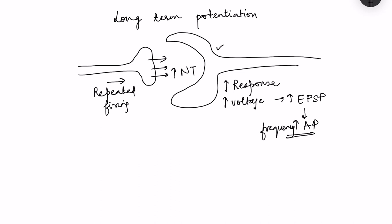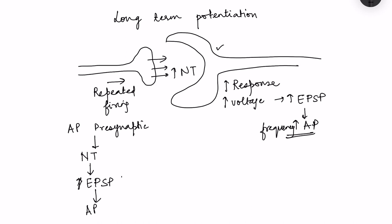The fundamentals of synaptic transmission tell us that whenever there is an action potential in the pre-synaptic neuron, it causes release of neurotransmitters into the synaptic cleft, which then act on the post-synaptic neuron. They bind to certain receptors on the post-synaptic neuron, and if it is an excitatory neurotransmitter, it leads to generation of EPSP. If EPSP reaches threshold, it leads to generation of an action potential.